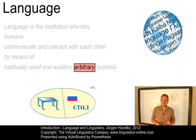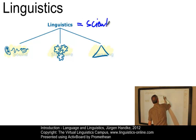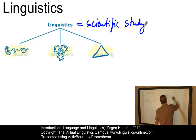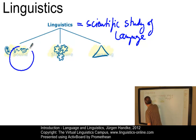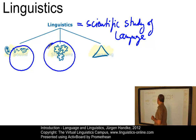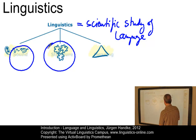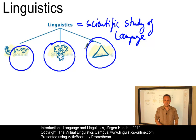Let us now see how linguists study language. Linguistics is the scientific study of language, and it can be subdivided into three main branches. The first branch deals with sound — speech sounds in general or the sound elements in particular languages. The second branch deals with structure: the structure of words, sentences, and phrases. Finally, we have to look at meaning — the meaning of words, sentences, and longer stretches of speech such as utterances and conversation.